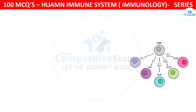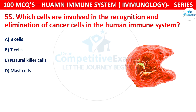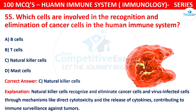Question number 55. Which cells are involved in the recognition and elimination of cancer cells in the human immune system? The options are B cells, T cells, natural killer cells, or mast cells. The correct answer is C, that is natural killer cells. Natural killer cells recognize and eliminate cancer cells and virus-infected cells through mechanisms like direct cytotoxicity and release of cytokines, contributing to immune surveillance against tumors.